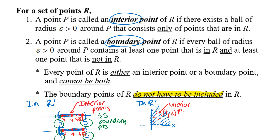There are infinitely many interior points in the first quadrant. The boundary points would be all the points on the coordinate axes — that's the edge of this region. Because I drew dashed lines, those boundary points are not actually included in the region. For example, the point (1, 0) is a boundary point — it's at the edge of the region.